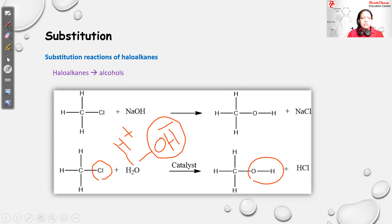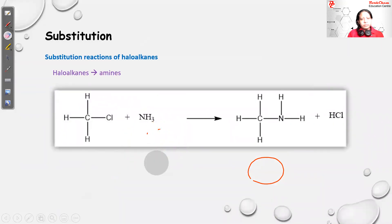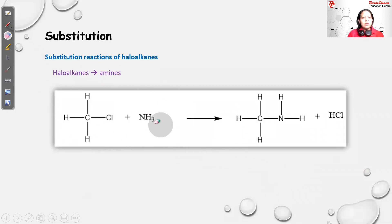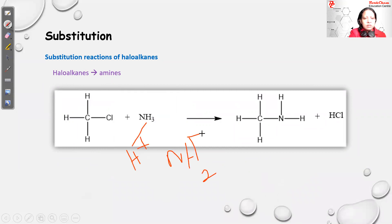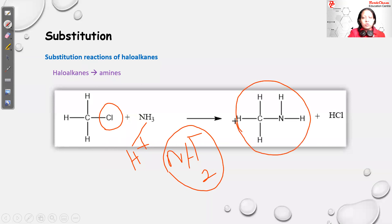Haloalkanes also undergo substitution with ammonia. In this reaction the Cl is replaced by NH2. We break down ammonia into H+ and NH2−, then replace the Cl− with NH2−. The product is CH3NH2, where NH2 replaces the Cl, and the other product is HCl — so these reactions give amines. For a two-carbon haloalkane like chloroethane, we can get aminoethane or ethanamine.